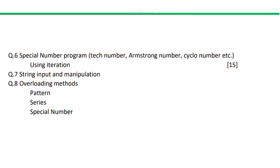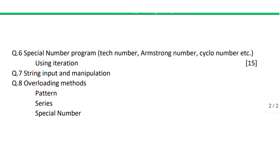The sequence of questions can vary. There will be a special number program — it can be a tech number, Armstrong number, strong number, automorphic number, cyclic number, duck number, neon number, and others. These are different types of numbers where we apply logic using iteration.